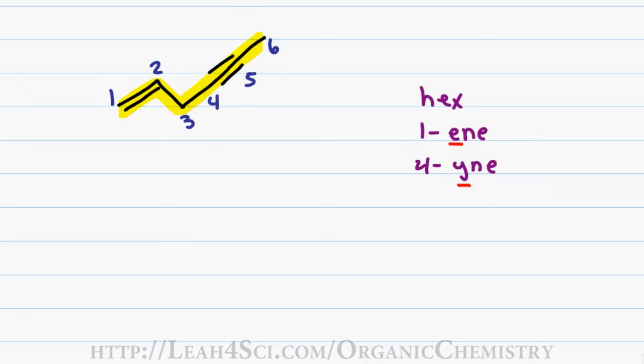In previous examples, we've shown that you could put the number before the name, but because we have 2 last names here, each number has to precede its specific functional group. This gives me a complete name of hex-1-ene-4-yne.